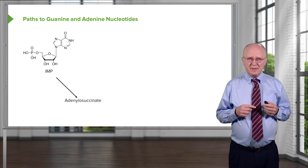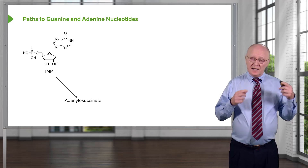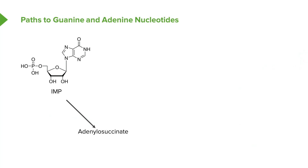In going from IMP in the direction of making the adenosine nucleotides, we see the first molecule formed is adenylosuccinate. Adenylosuccinate is made from IMP by a transamination reaction. The source of that amine is aspartic acid. This reaction requires energy, and the energy comes from the hydrolysis of GTP to make GDP.